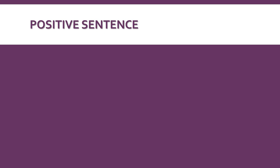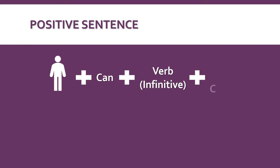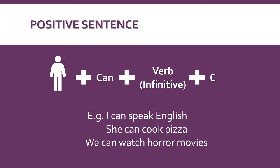Now we're going to analyze the types of sentences. We're going to start with the positive sentence: pronoun, then the modal verb can, then the verb in the infinitive form, and finally the complement. For example: I can speak English, she can cook pizza, we can watch horror movies.